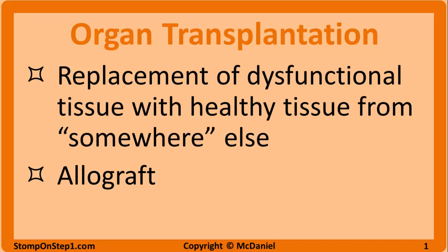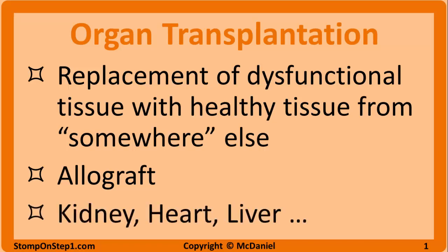The donor for an allograft can be living or recently deceased, depending on what organ we're talking about. A wide variety of tissues can be transplanted, but our discussion will focus primarily on functional organs that require vascular connection, such as the kidney, heart, and liver. We will not talk much about structural tissues like tendons, because they don't really have as much rejection. Blood transfusion is another type of transplant, but we will cover it in more depth in the hematology section.